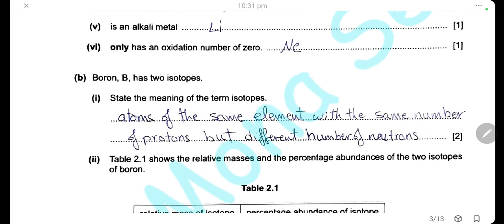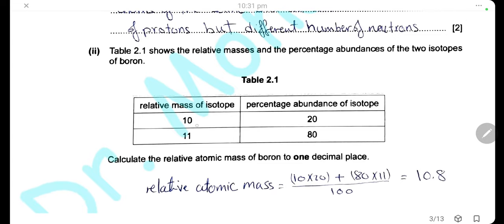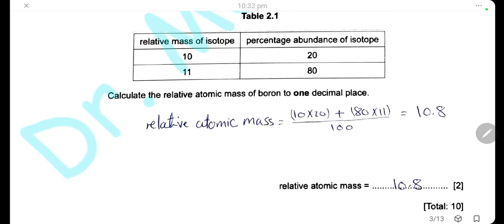Boron has two isotopes. State the meaning of the term isotope: isotopes are different atoms of the same element with the same number of protons but different number of neutrons. Here we have a table showing the relative masses and percentage abundances: isotope 1 has mass 10 and abundance 20%, isotope 2 has mass 11 and abundance 80%. To calculate the relative atomic mass of boron, we multiply each mass by its percentage abundance, add them together, and divide by 100: (10×20 + 11×80) ÷ 100 = 10.8.